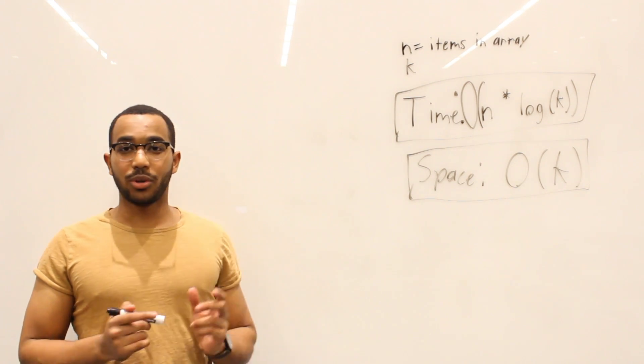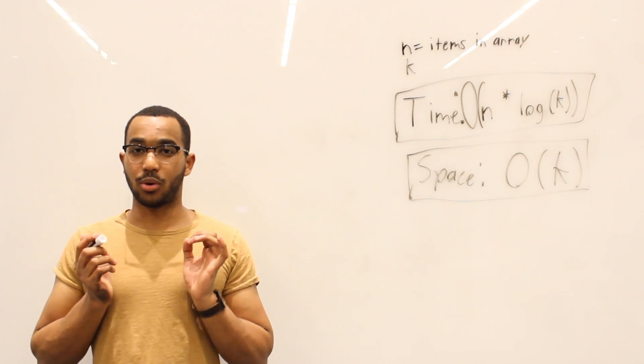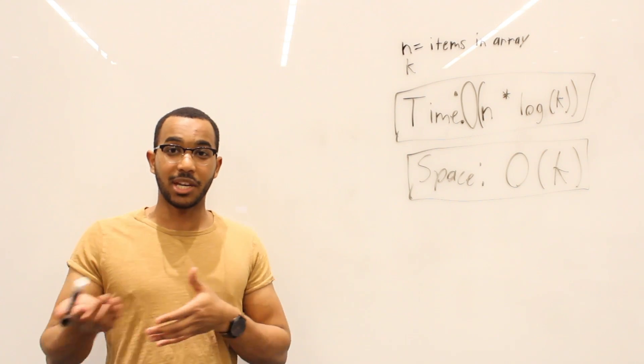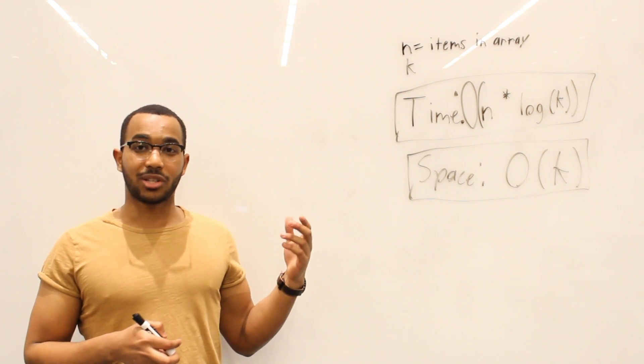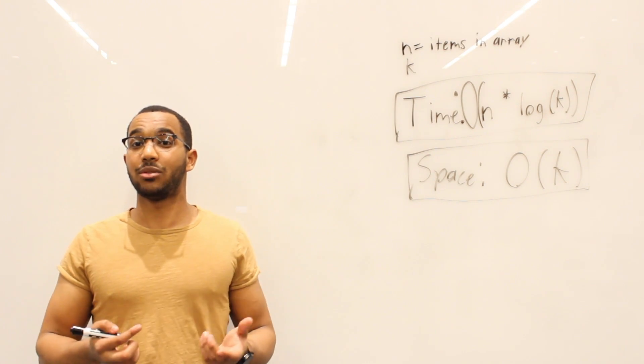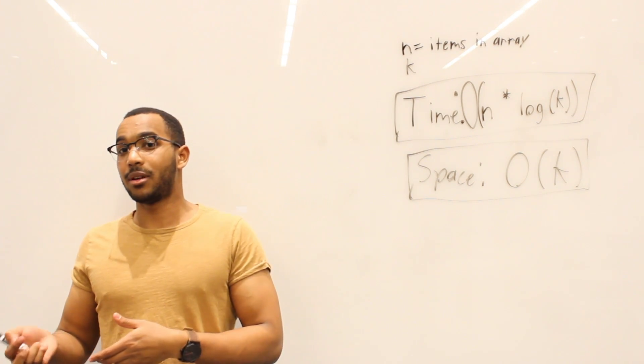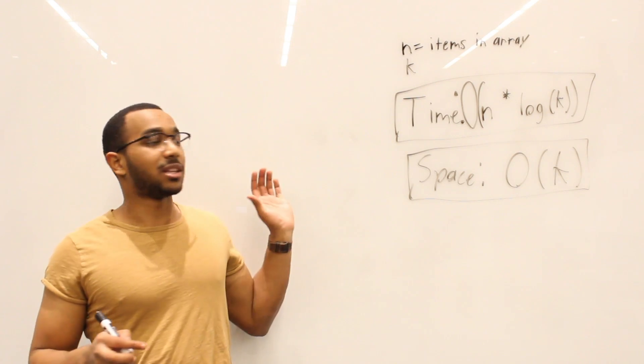So continuing on to the space, the space we're going to use is O of K. We're going to hold K plus 1 items at maximum in the min heap. And we just remove that plus 1 and we're just left with K. And we bound to O of K.